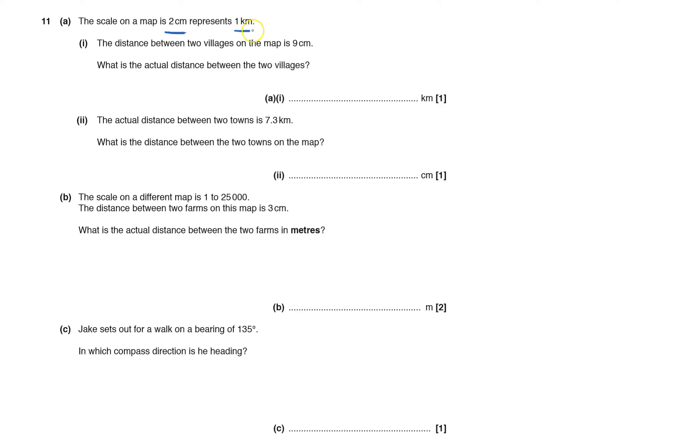We've got two centimeters representing one kilometer, and the distance is nine centimeters. So nine centimeters with two centimeters being one kilometer - times that by four and a half. The answer is four and a half kilometers, or 4.5.